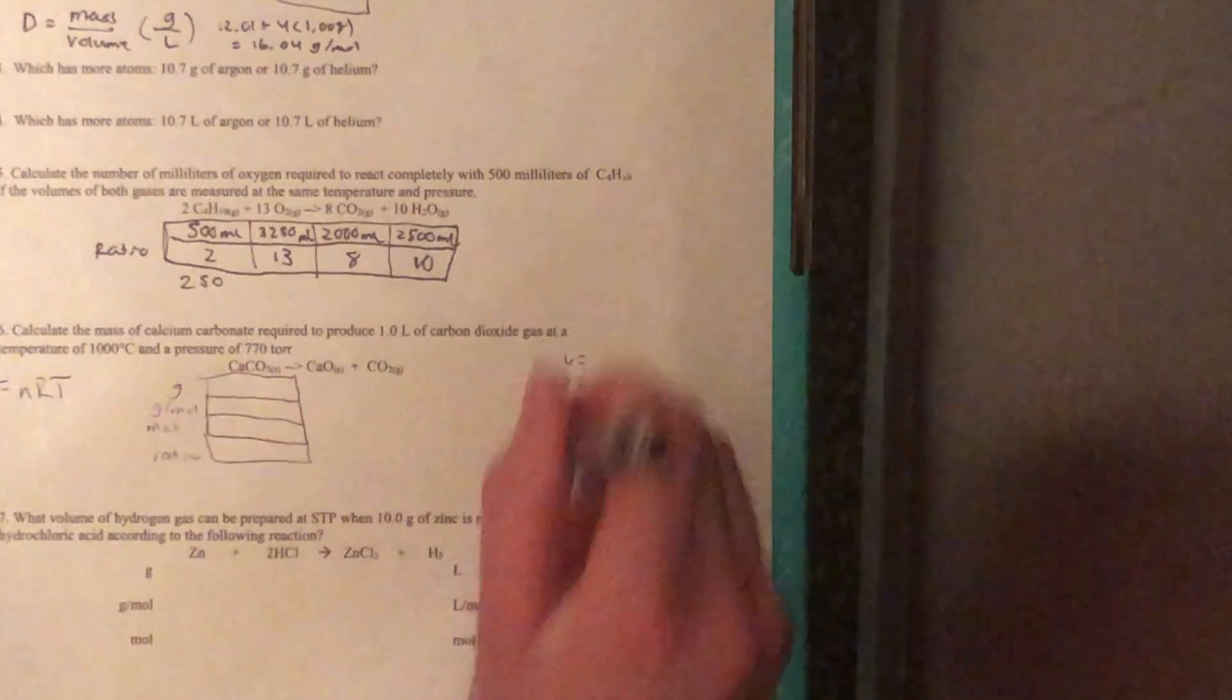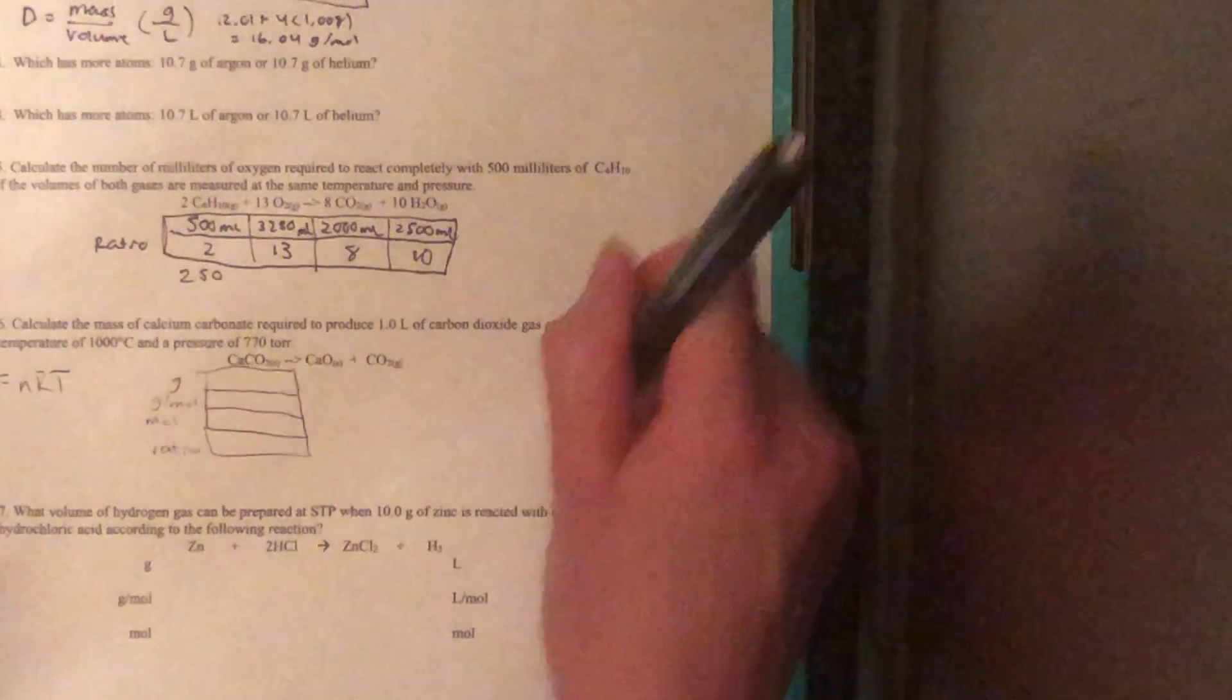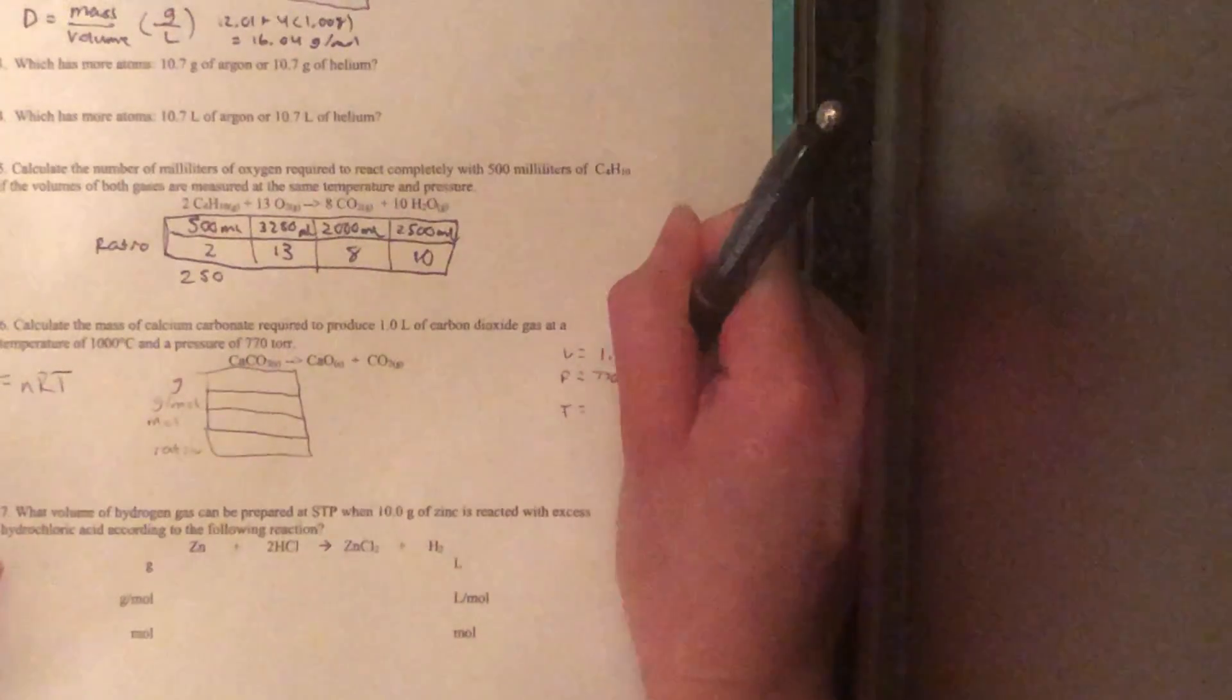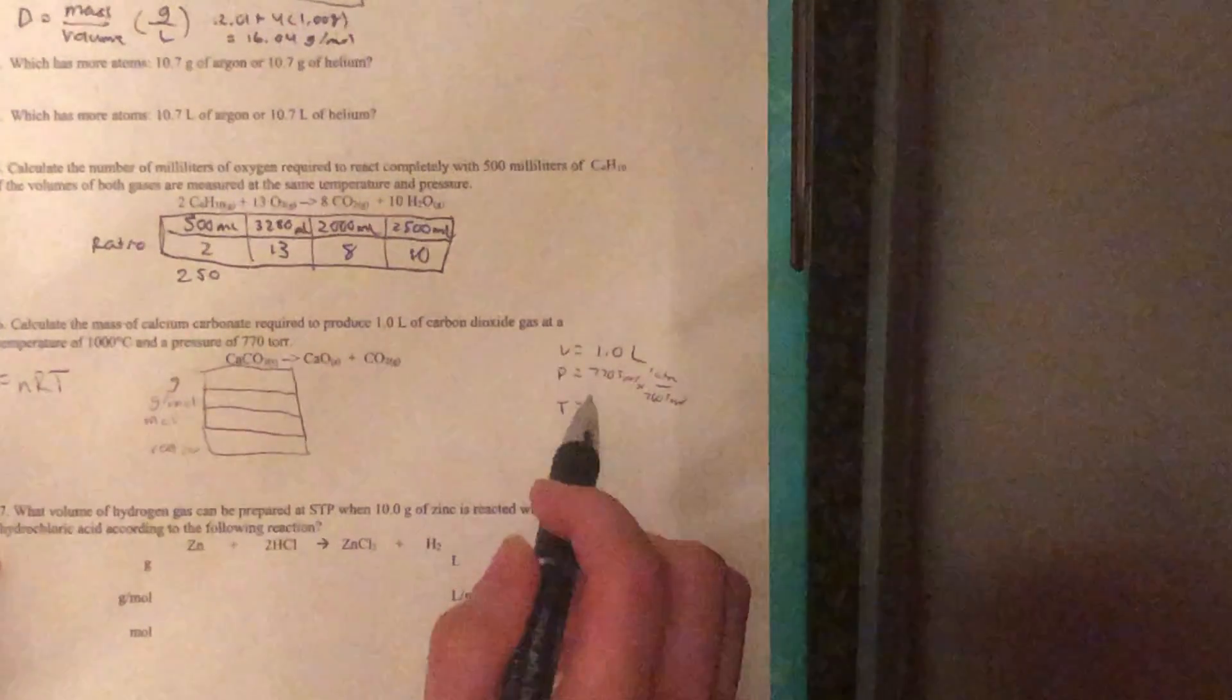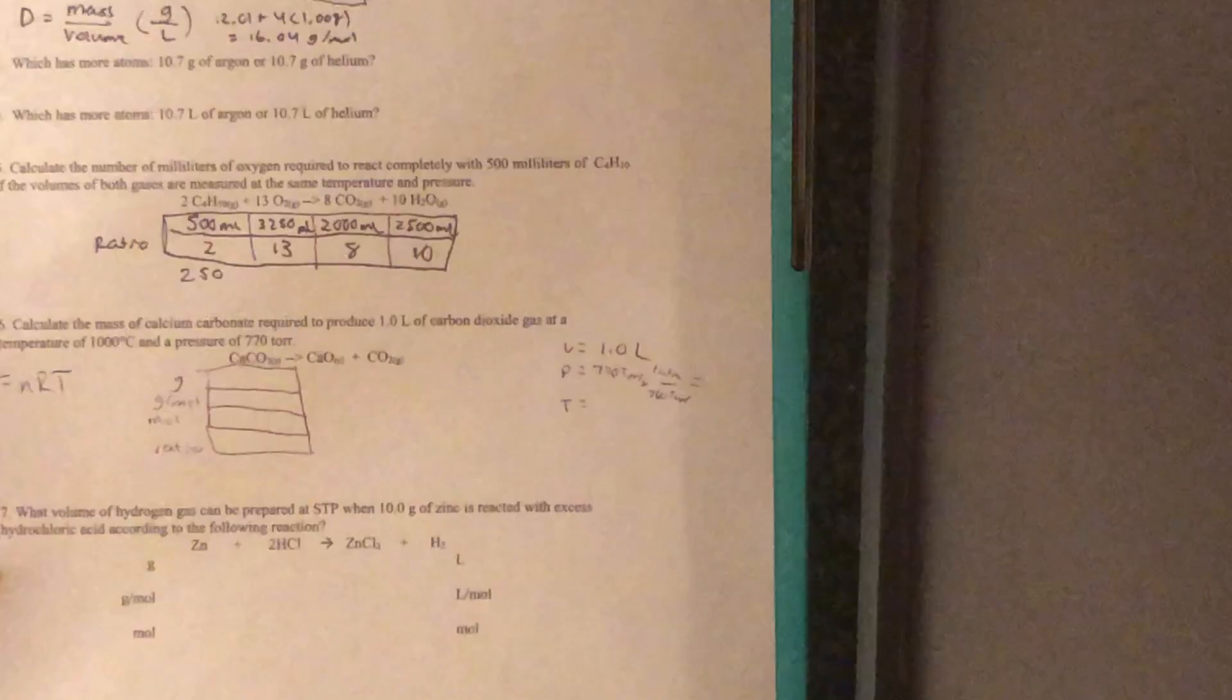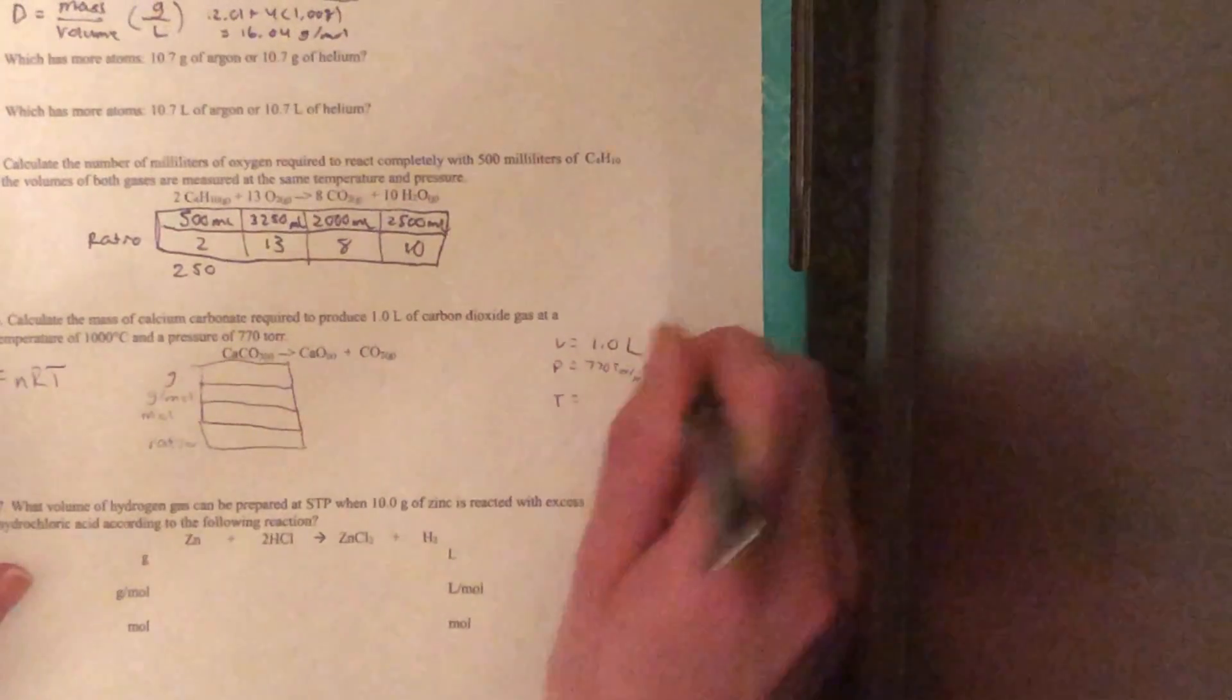Our volume we can get from the question, one liter. Our pressure is given as 770 torr, but we're going to need to convert that to atmospheres for the purpose of our equation. So I set that up as 1 atmosphere is 760 torr, and that gives us 1.01 atmospheres as our pressure.